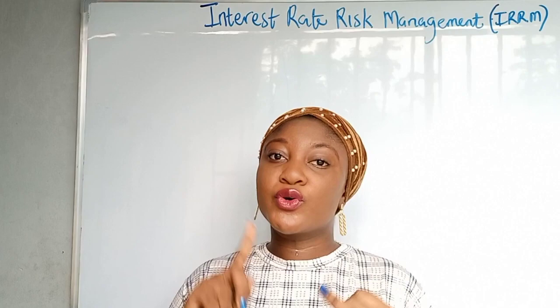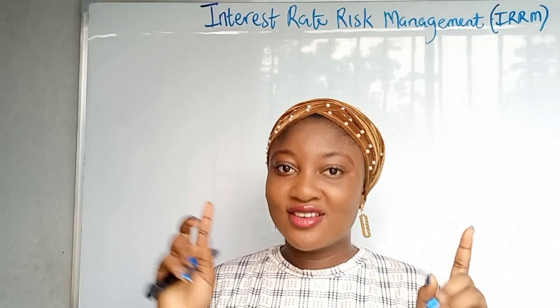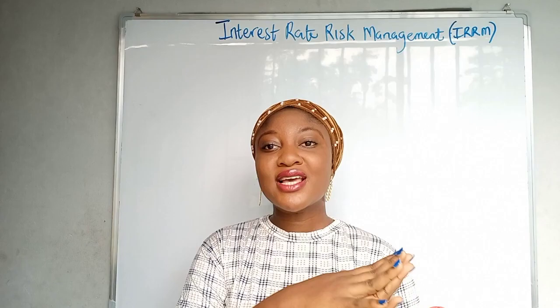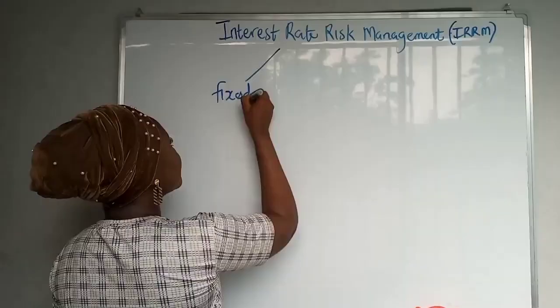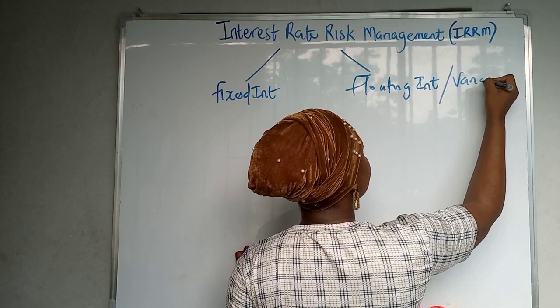Interest rates risk management: today interest rates are five percent and you want to take a loan in six months time. It's possible that interest rates will have gone up, so what are you doing to hedge against a rise in interest rates? That's what interest rate risk management is all about. Companies can take a loan at fixed interest or floating interest.